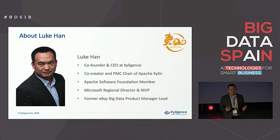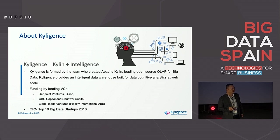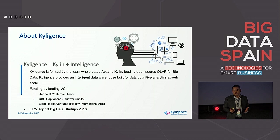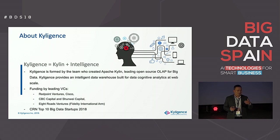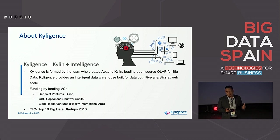A little bit about myself. I'm the co-founder and CEO of Kylin Genes, the startup behind the open-source project Apache Kylin. I'm also co-creator and now PMC chair of Apache Kylin. Kylin Genes means Kylin and intelligence. We formed this company three years ago with the co-creators of Apache Kylin, and raised funding from RedPoints and Cisco at the beginning. We closed our Series A last year, and just closed our Series B from Fidelity International. We're also honored to be in the CRN top 10 big data startups just a few months ago.